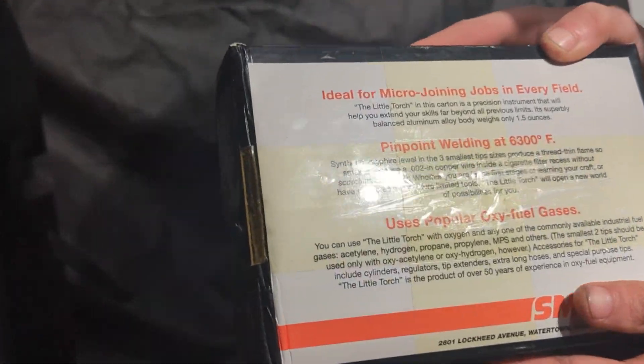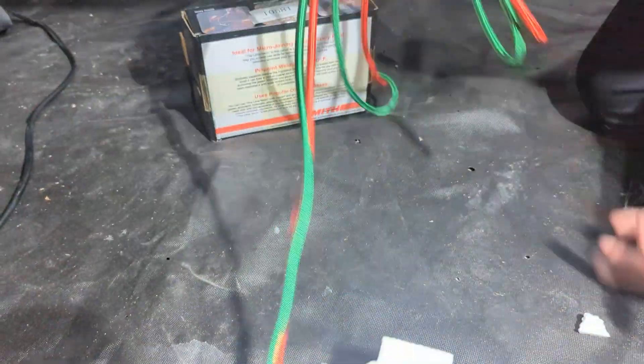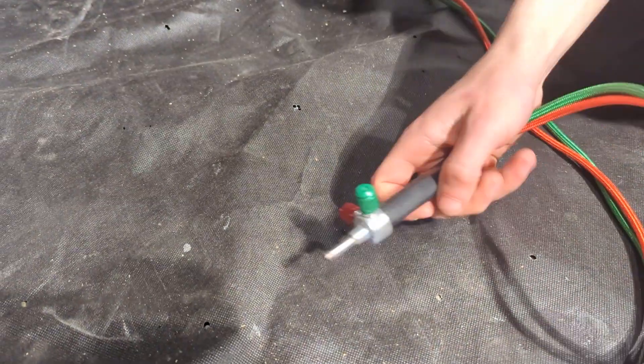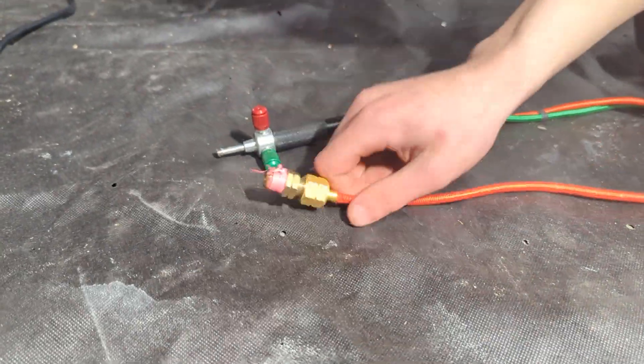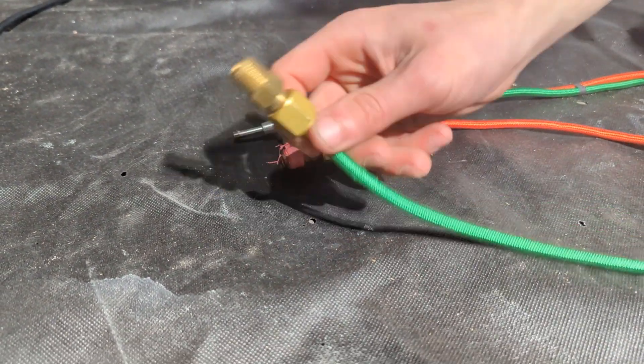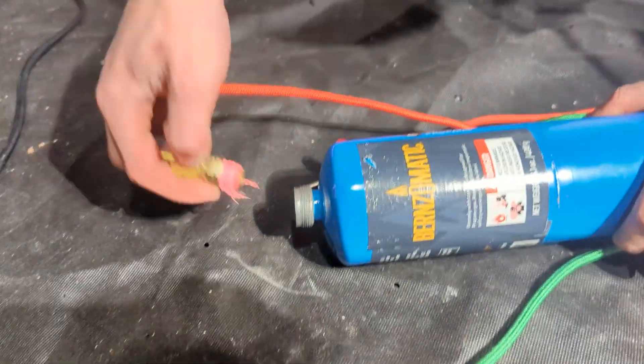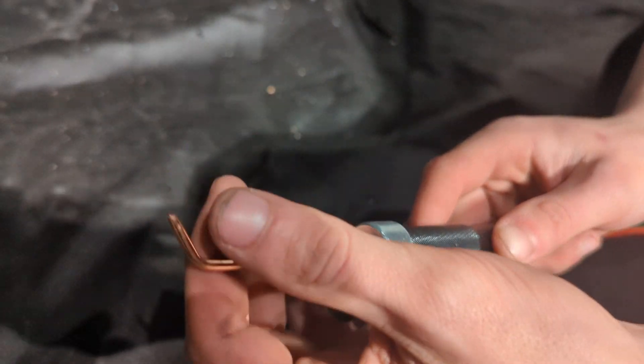We have our jewelry torch here and we're going to carefully unbox it. This is apparently the little torch, but it's a big torch in my book. We have two inputs here: this one's electricity and this one's gas. This will go to the oxygen concentrator, and I'm going to use this propane tank right here and connect it here.